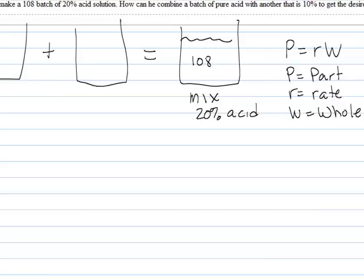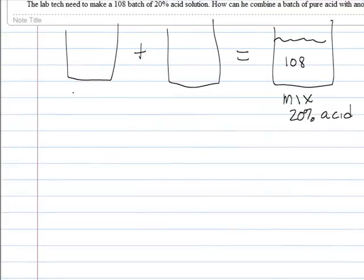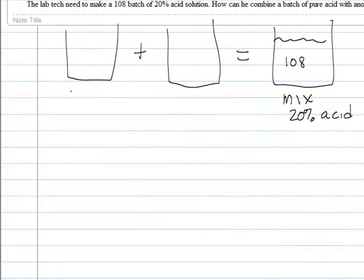So the question is, how much, how can he combine pure acid? The pure acid means 100%. So this is pure. We don't know what this is. How much can he combine a pure acid with another, this is the other, that is 10%.